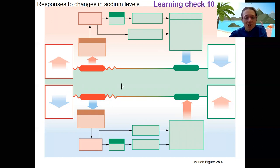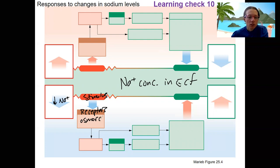Okay. So now we've got sodium concentration in the ECF. So if we go low, that's our stimulus. We're going to have receptors, which are osmoreceptors in our hypothalamus.